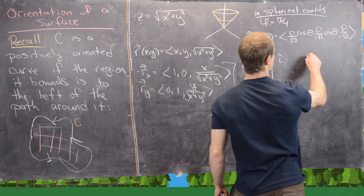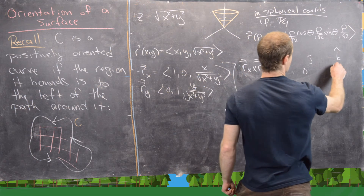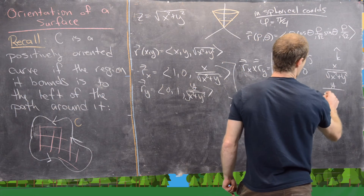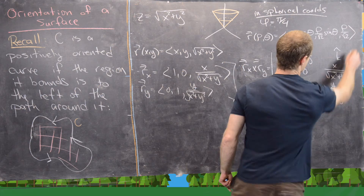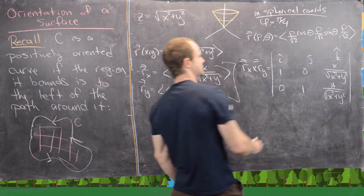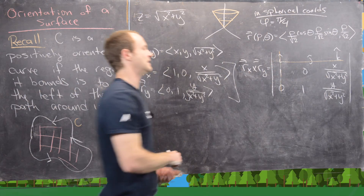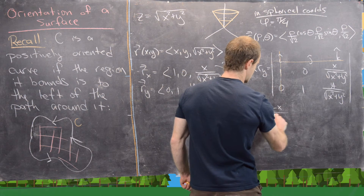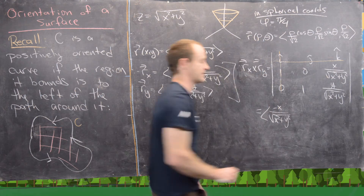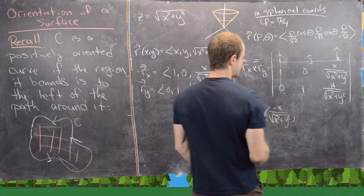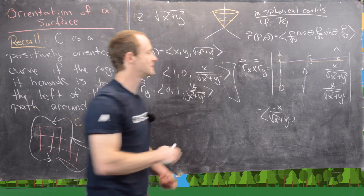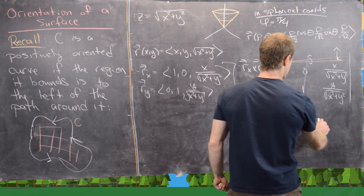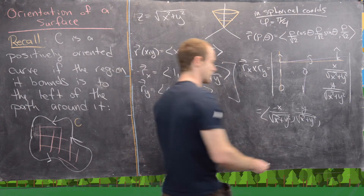R_x cross R_y is the determinant with i, j, k in the first row; (1, 0, x/sqrt(x²+y²)) in the second; and (0, 1, y/sqrt(x²+y²)) in the third. In the first component we get -x / sqrt(x² + y²); in the second component, -y / sqrt(x² + y²); and in the last component, 1.